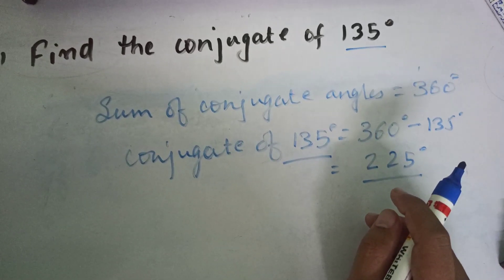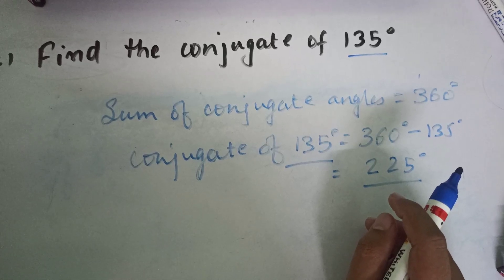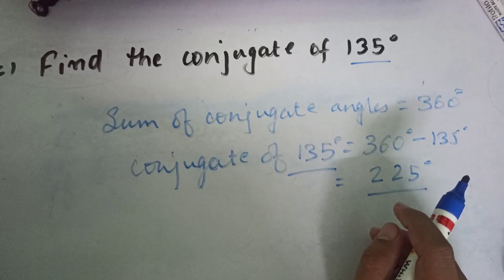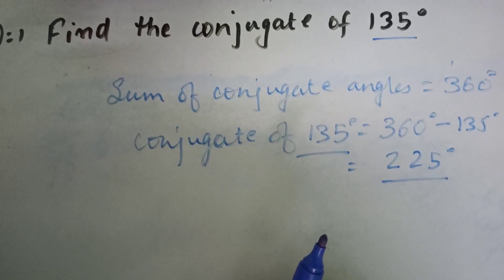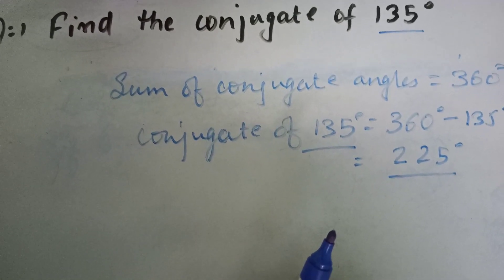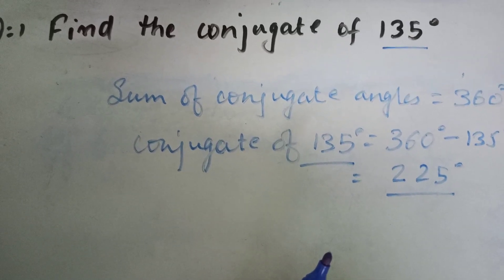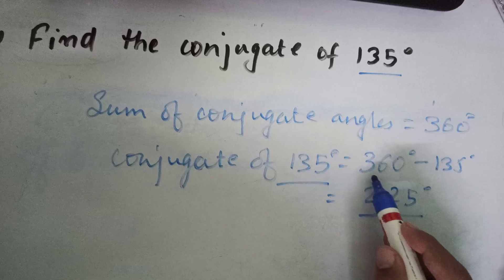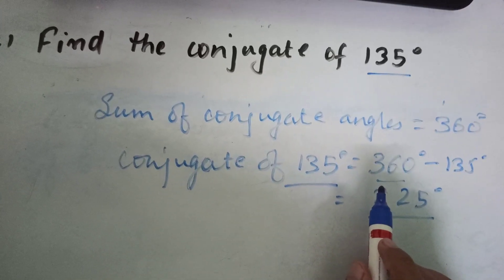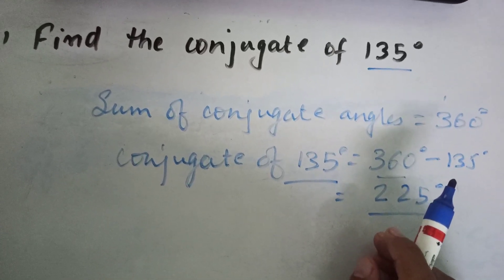That's how you can find it. I hope you like it. Similarly guys, we need to subtract from 90 in complementary angles, and in supplementary angles we need to subtract from 180, or in conjugate we need to subtract from 360. So that's how you can find it.